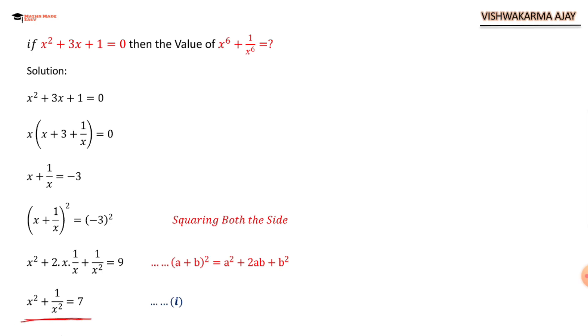So we may need this in future, that's why I have marked this as equation number 1. Sure we will need this. Okay, now taking cube on both sides, (x² + 1/x²)³ = 7³.